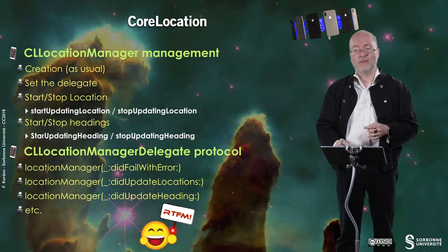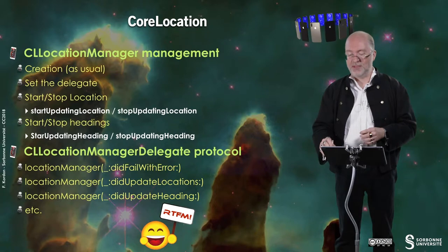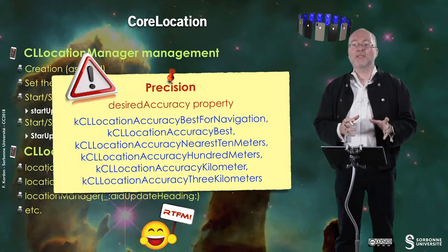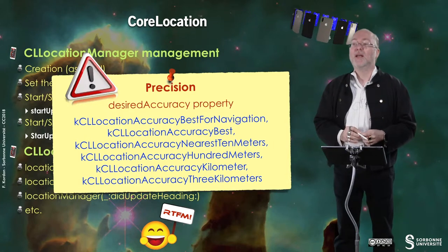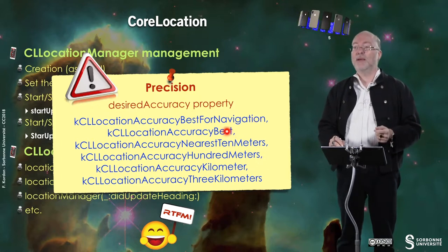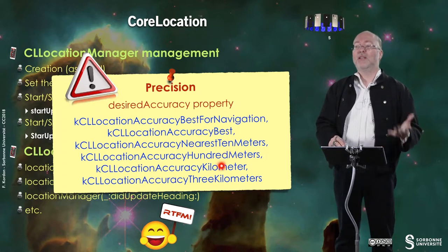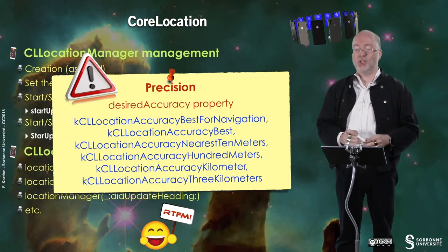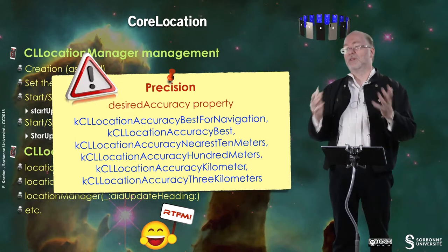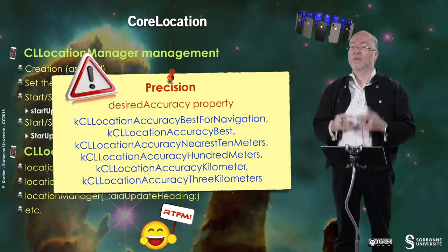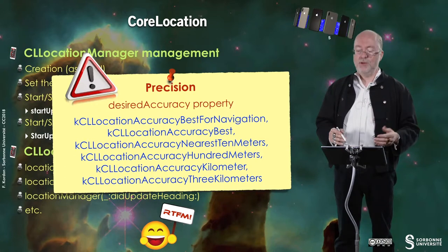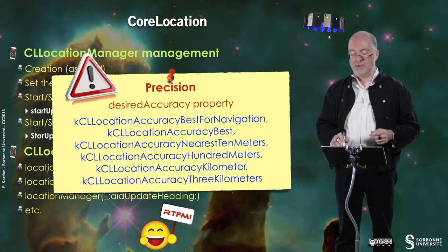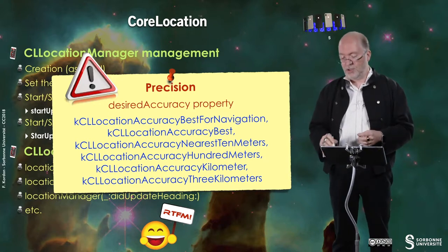For other methods, have a look at the documentation. You can set the precision and accuracy using the desiredAccuracy property: best for navigation, accuracy best, nearest 10 meters, nearest 100 meters, kilometers, or 3 kilometers. Of course, 3 kilometers will consume less energy than 10 meters. Choose according to the type of application — if you're moving slowly, maybe you need 10 meters; if you're using a car, 100 meters or kilometers may be sufficient.